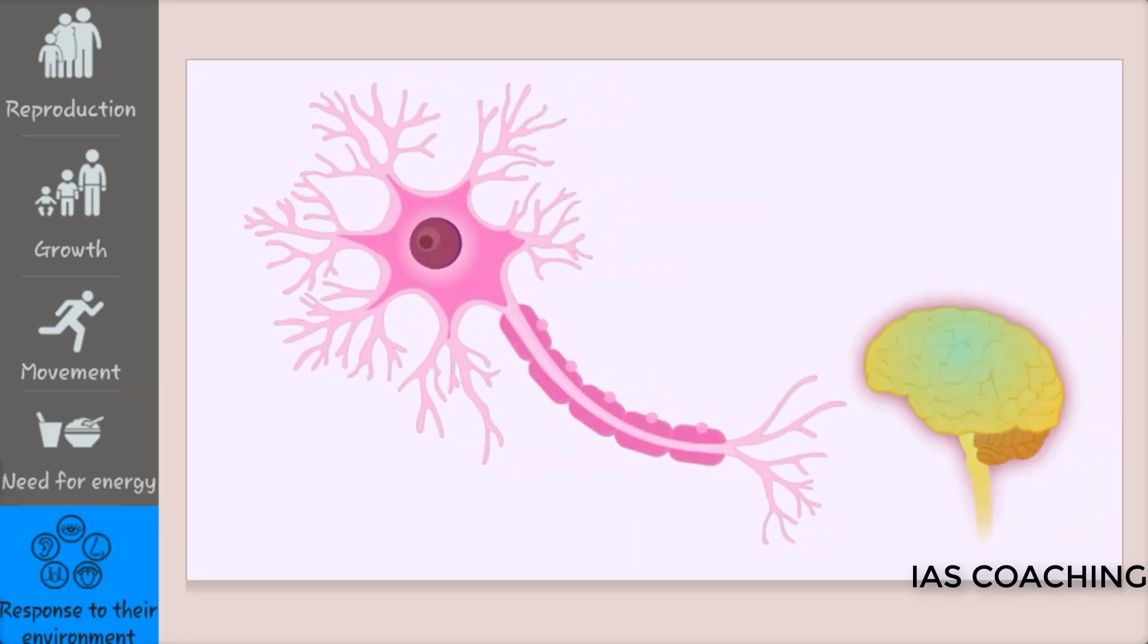Cells respond to external stimuli by encoding and sending electrochemical signals to other parts of the body. For example, in a nerve cell, the dendrites serve as the stimulus receptors. They transfer the signal to the cell body or nucleus which then directs the nerve impulse to the axon. The axon carries this signal to the brain.